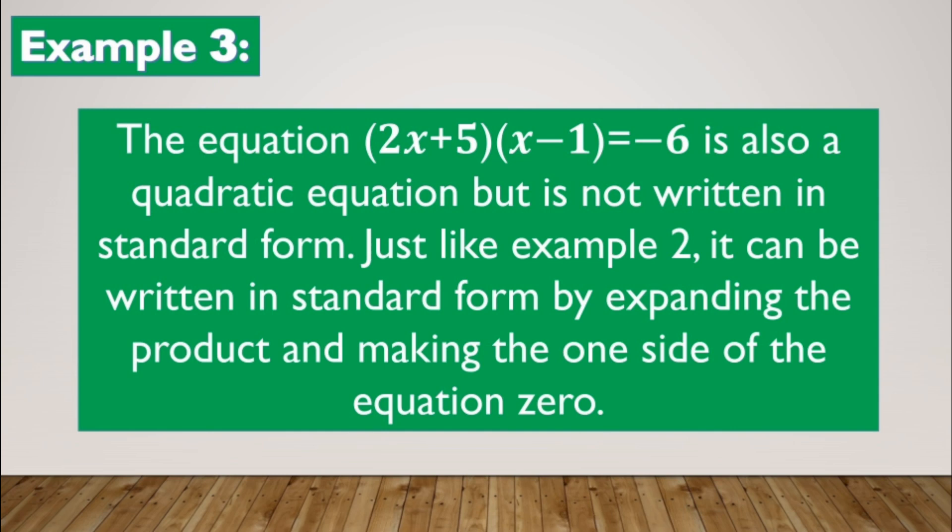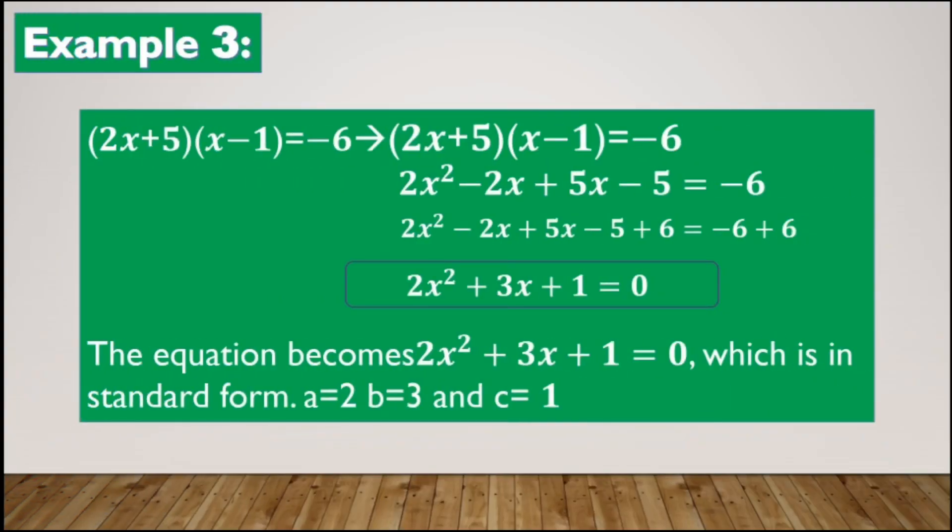For our third and last example: 2x plus 5 times x minus 1 is equal to negative 6. The equation is also a quadratic equation but is not written in standard form. Just like example 2, it can be written in standard form by expanding the product and making one side of the equation equal to 0. Let us expand using the FOIL method.